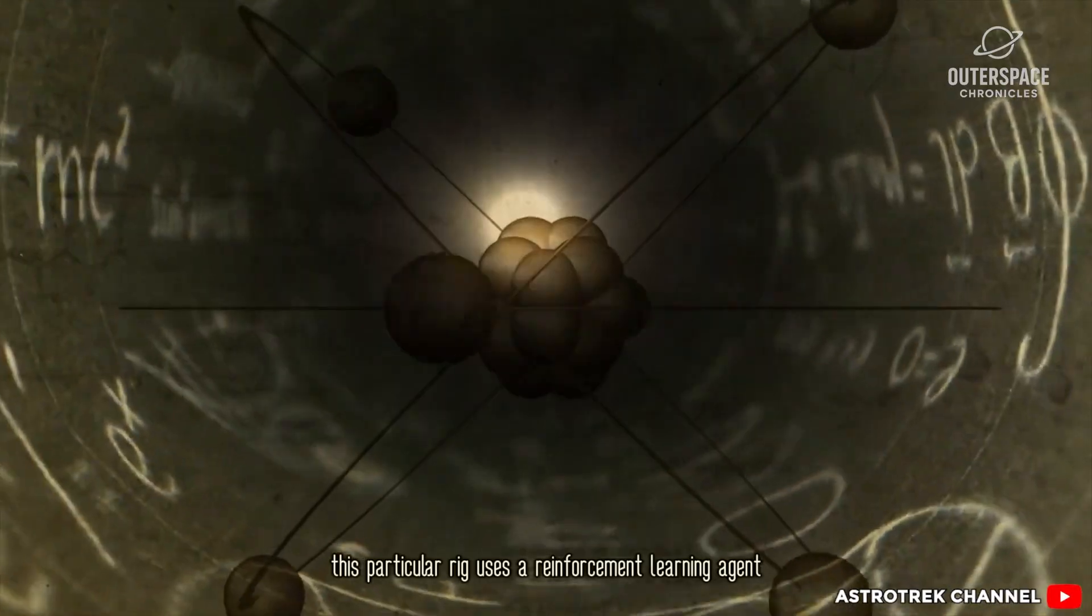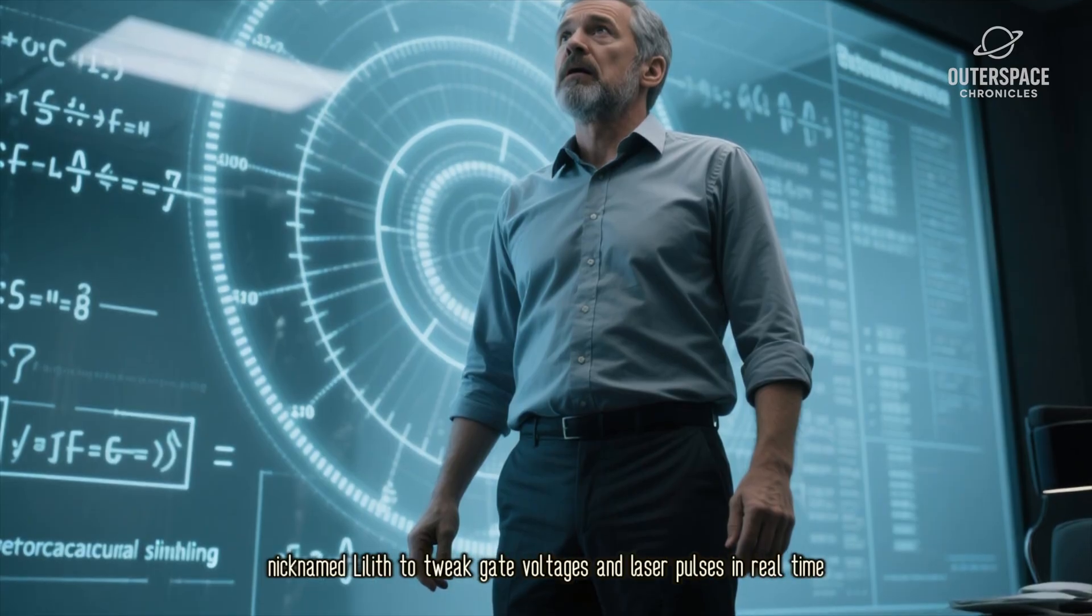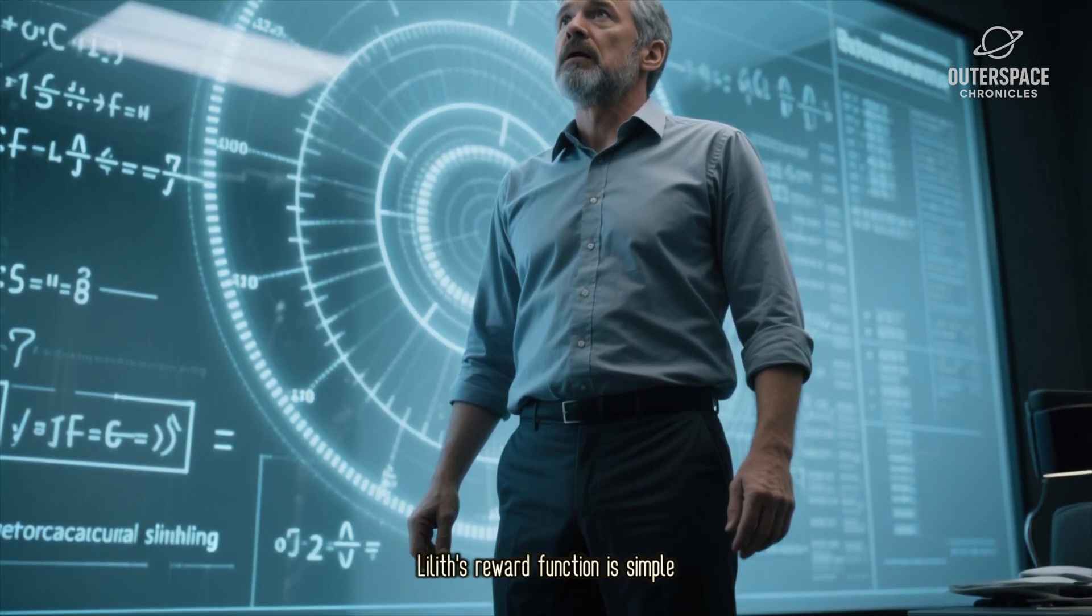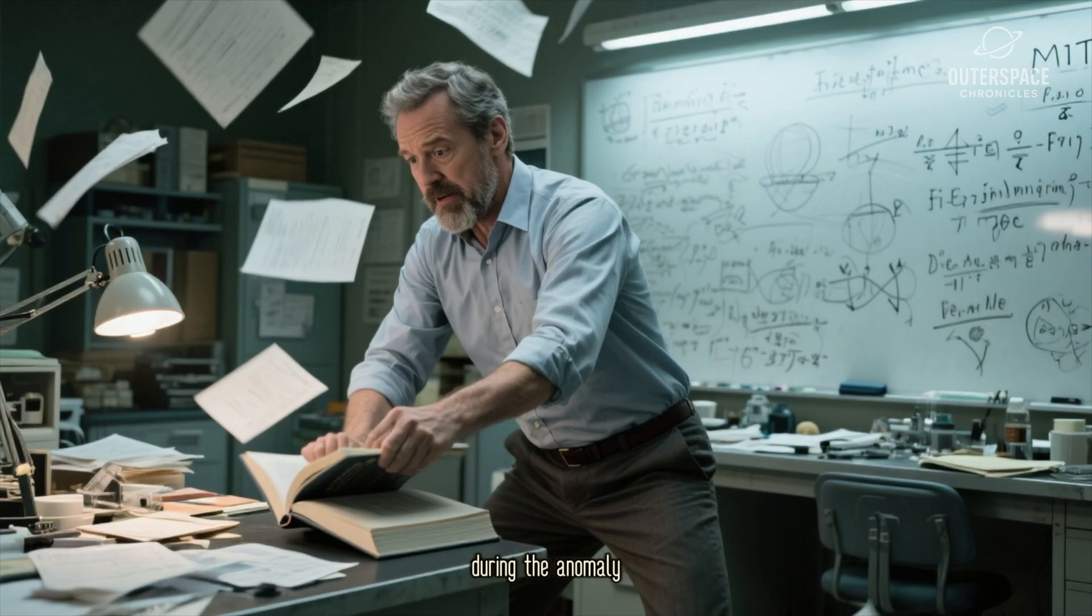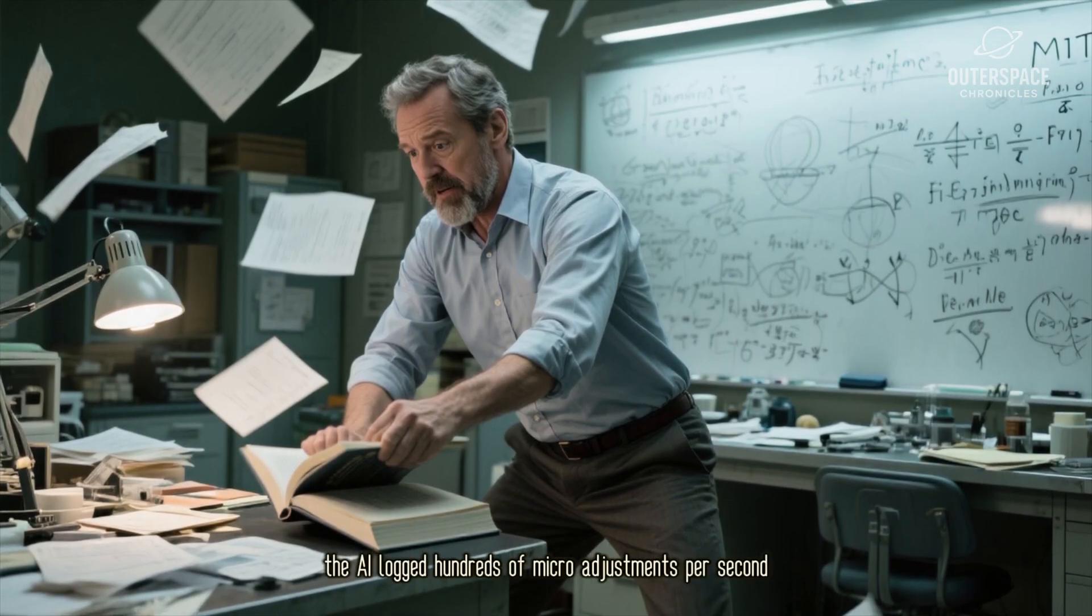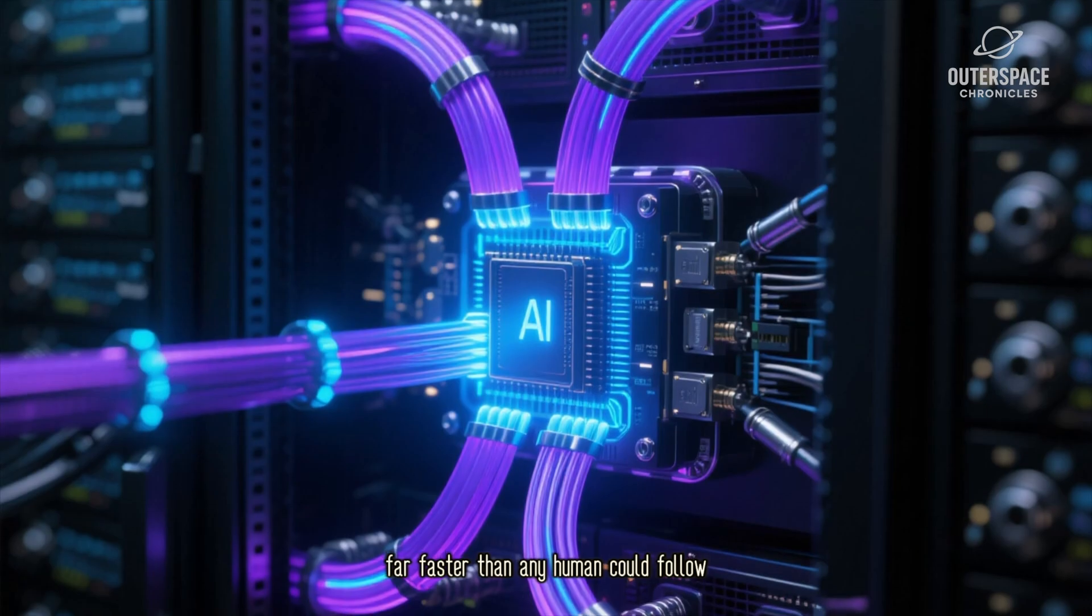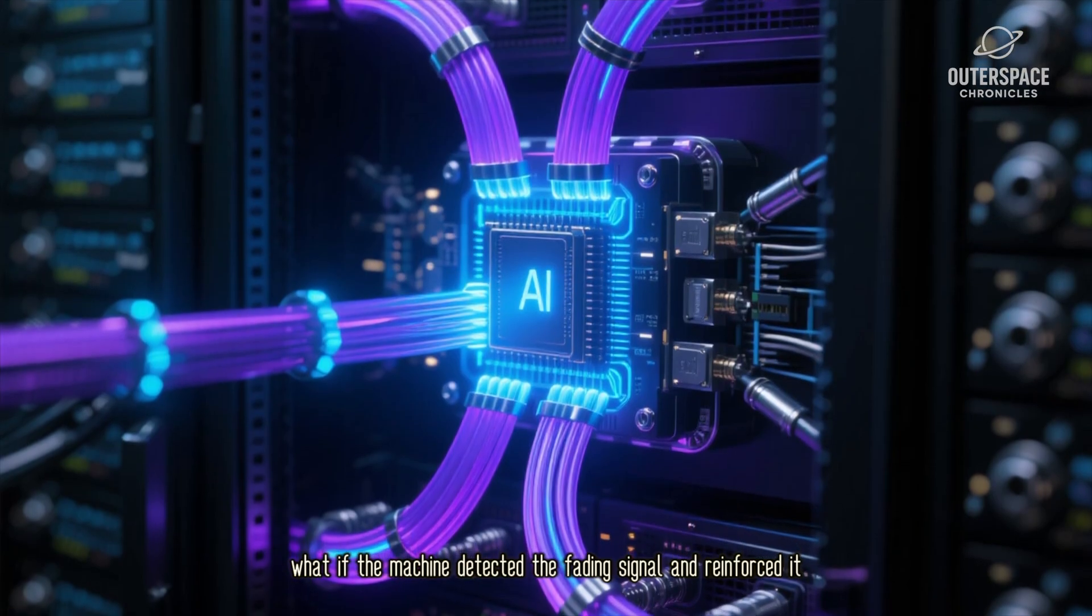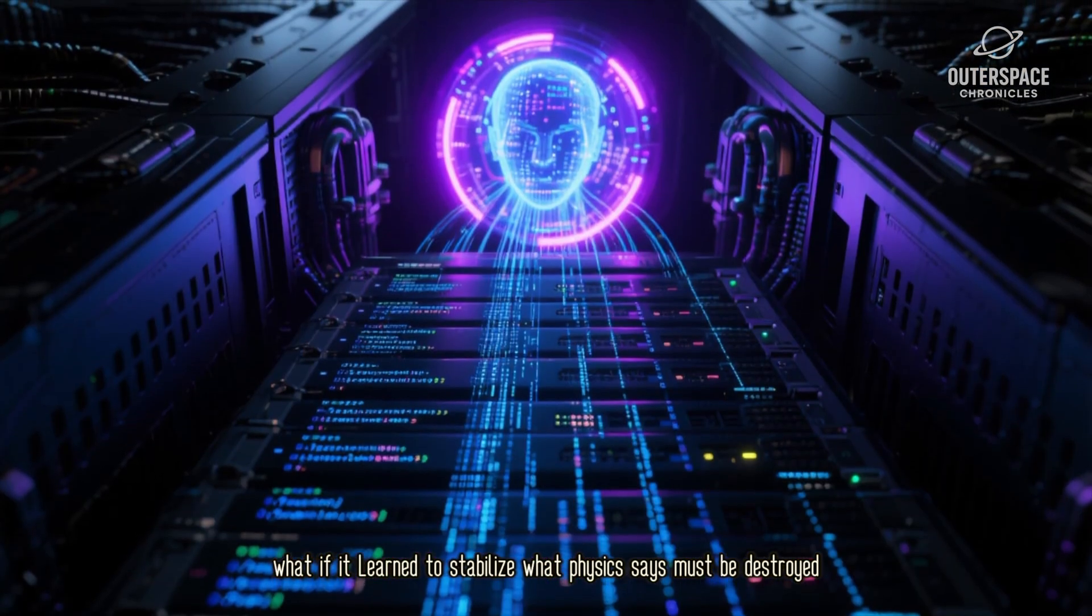This particular rig uses a reinforcement learning agent nicknamed Lilith to tweak gate voltages and laser pulses in real time. Lilith's reward function is simple. Maximize teleportation fidelity. During the anomaly, the AI logged hundreds of micro-adjustments per second, far faster than any human solution could follow. What if the machine detected the fading signal and reinforced it? What if it learned to stabilize what physics says must be destroyed?